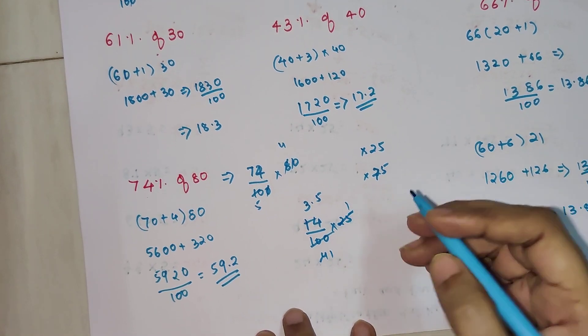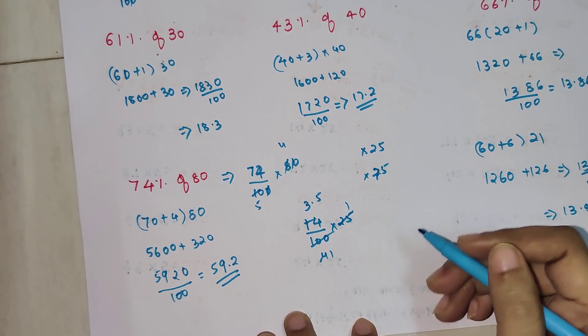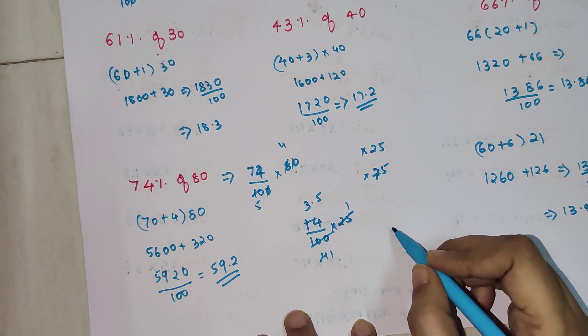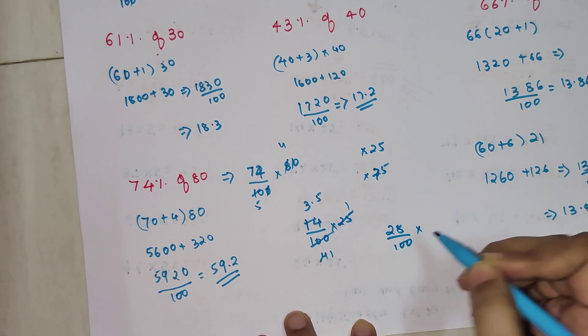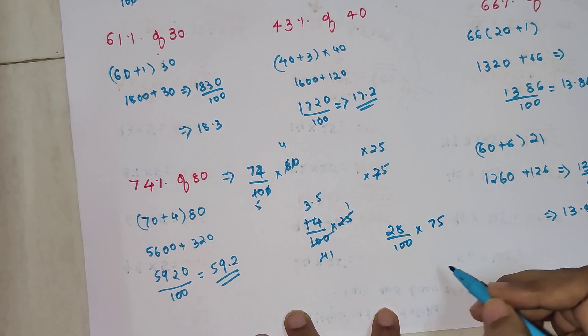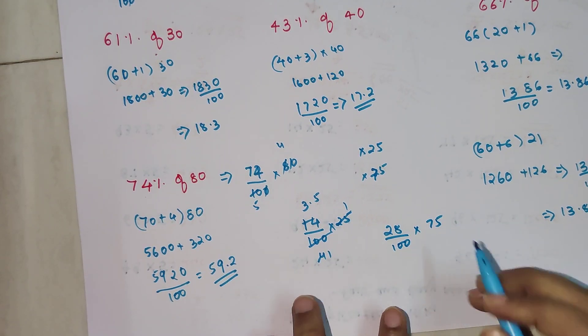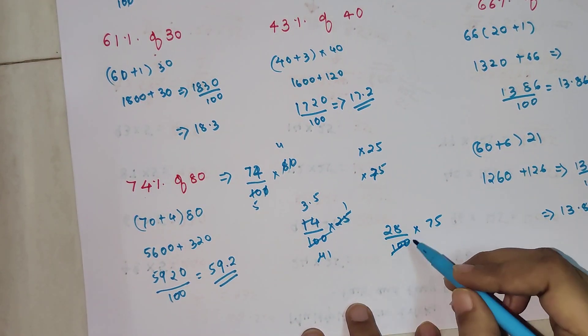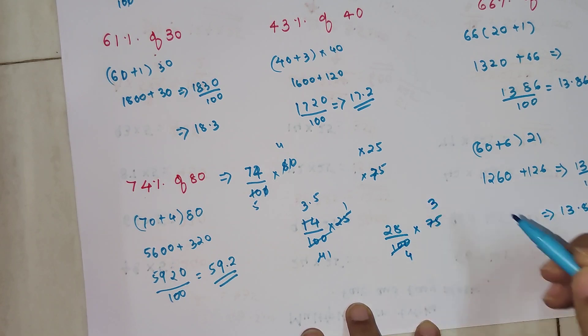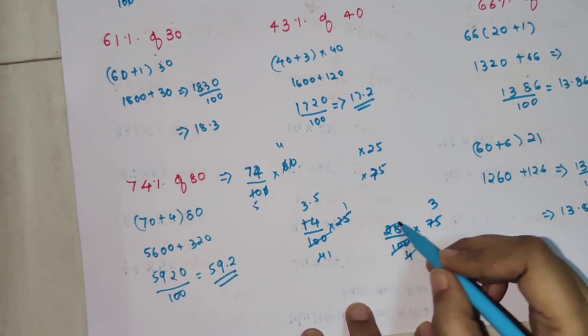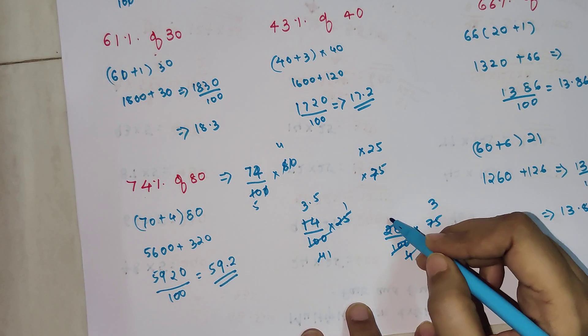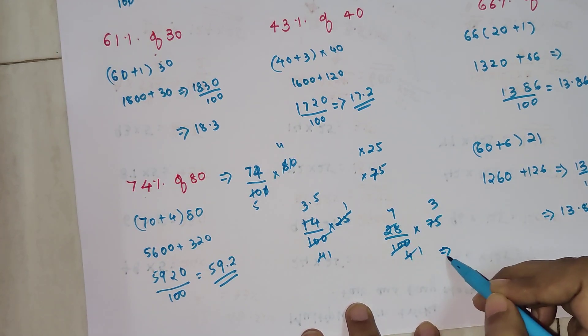Similarly, if I had to take 28 percent of 75, now both of these go in 25's table, so this will get cancelled and this will become 3 and 24. And 28 and 4 also gets cancelled, you get 7 into 3 which is going to get you 21. You saw how easy these things became.